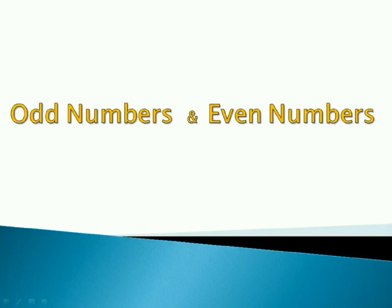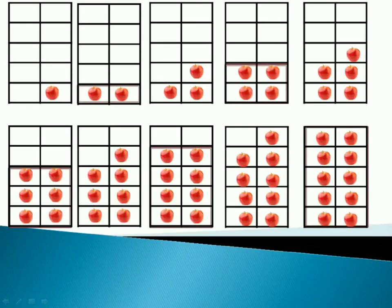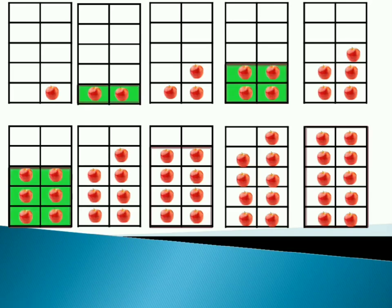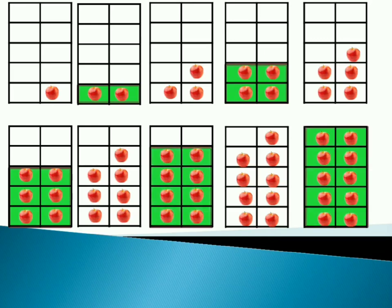So let's check odd number and even number. Let's try with a simple example. Here you can see many apples in the tables from 1 to 10. I am going to colour the boxes that are in pairs, like 2, 4, 6, 8, 10. So the coloured ones are even numbers, and rest are odd numbers, like 1, 3, 5, 7, 9.